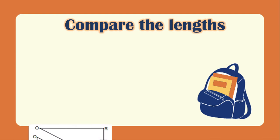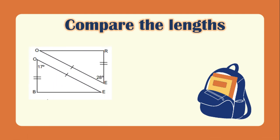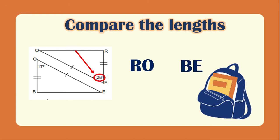We will compare the lengths. So in these two triangles, we need to look at RO. The opposite angle of RO is 28 degrees. And then BE — the opposite of BE is 17 degrees. Meaning, RO is greater than BE, because 28 degrees is larger than 17 degrees.